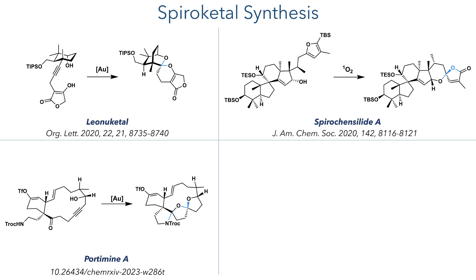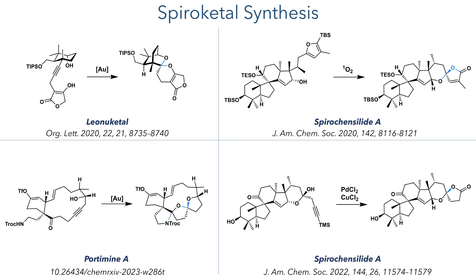We've also covered two different syntheses of spirochensylide A, which contains a 5,6-spirochetal system, one of which is present as a lactone. The Yang synthesis used a rather unusual reaction involving the addition of singlet oxygen to a furan, which then undergoes an intramolecular attack of the hydroxyl group, followed by a rearrangement. In the Hertz synthesis, they opted for an alkyne-based method, similar to the Brimble and Baran syntheses.